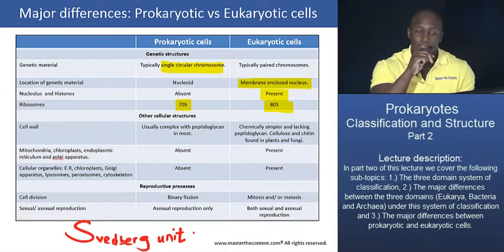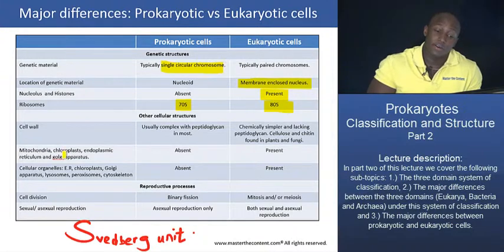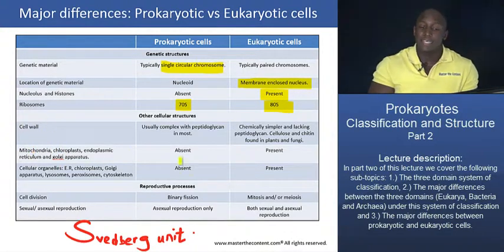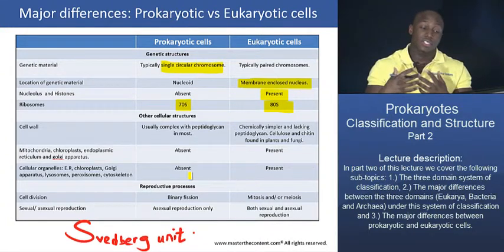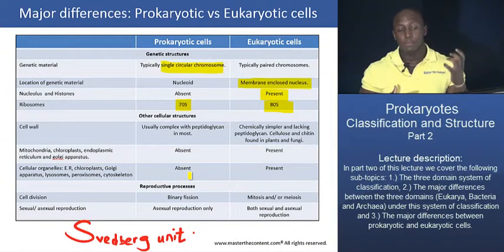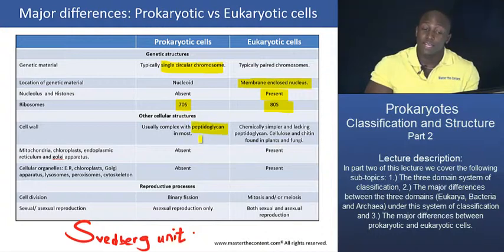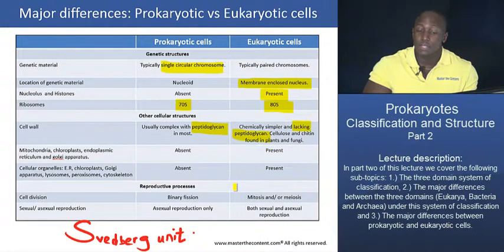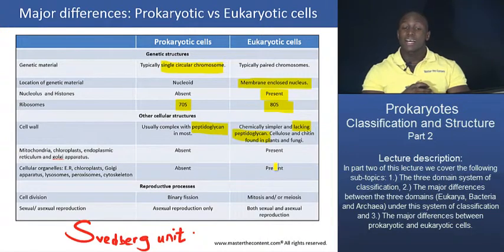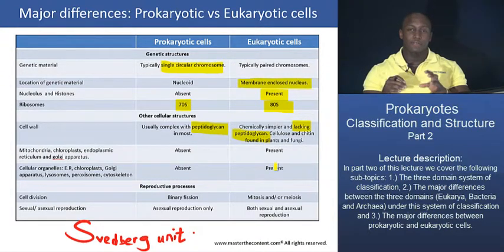That summarizes the differences in genetic structures. As far as the cell wall is concerned, prokaryotes usually have complex cell walls with additional structures on top, and they typically contain the compound peptidoglycan. Eukaryotic cells have relatively simpler cell walls and do not contain peptidoglycan. Examples of eukaryotic cell walls include cellulose in plant cells and chitin in fungal cells. The presence of peptidoglycan in prokaryotic cell walls and its absence in eukaryotic cell walls is a key distinction.